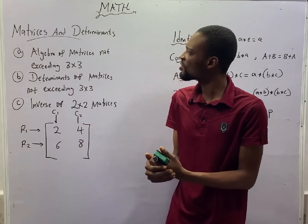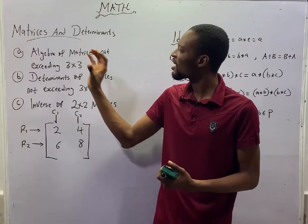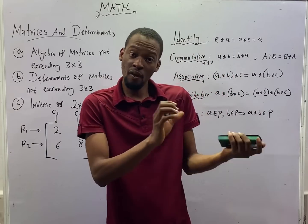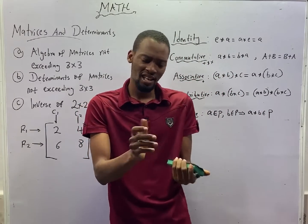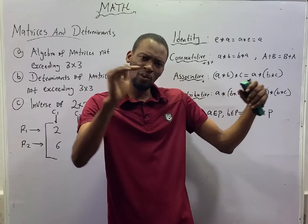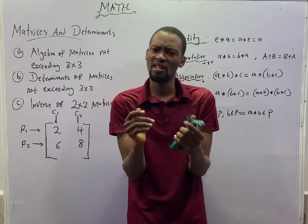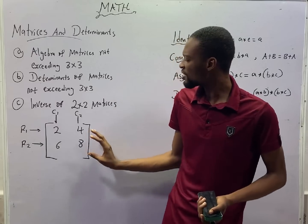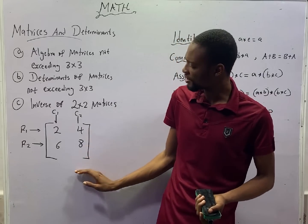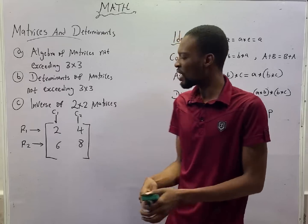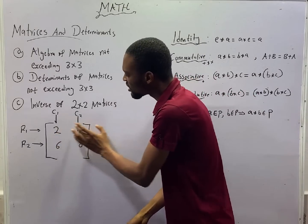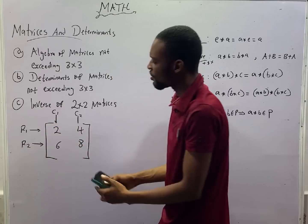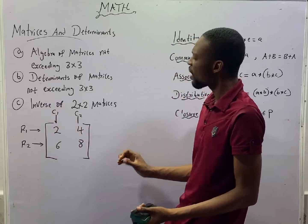In this episode, I shall be introducing Matrices and Determinants. A matrix is a number or letters arranged in a rectangular form and enclosed in a bracket. This is a typical example of a matrix — we have letters arranged in a rectangular form and enclosed in a bracket.